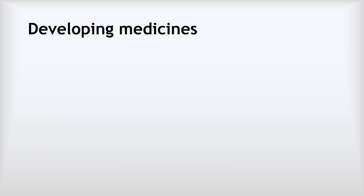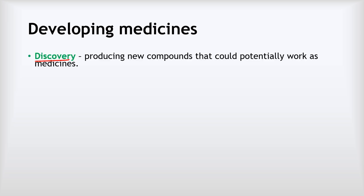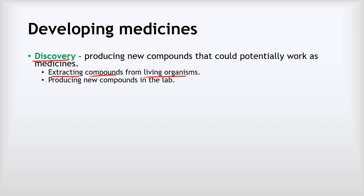Antibiotics are just one of many different types of medicines, so this section looks at how we develop new medicines. There are three stages. The first is the discovery stage — about producing new compounds that might potentially work as medicines. This might involve extracting compounds from living organisms, such as finding the active compounds in a herbal remedy and seeing if they can be turned into a medicine. It can also involve chemists in their laboratories producing brand new compounds.